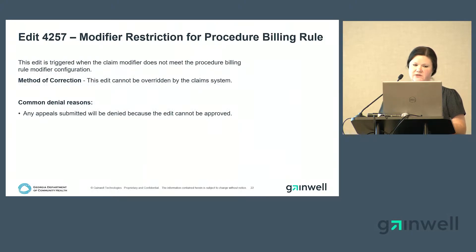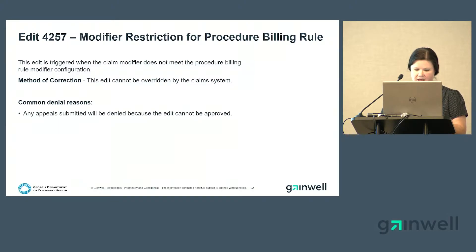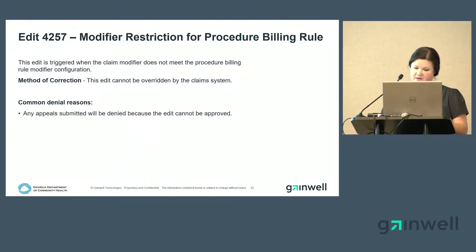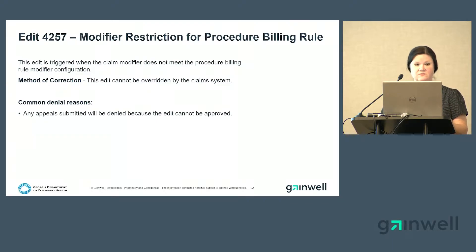Edit 4257 is for modifier restriction for procedure billing rule. This edit is set to auto-deny in GAMIS. The edit cannot be overridden by the claims system and will not be paid. Any appeals submitted on this will be denied because the edit cannot be overridden.